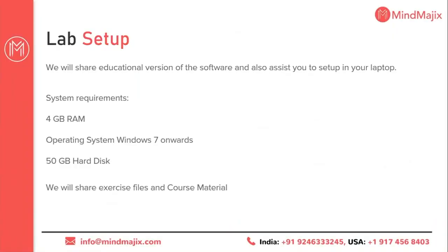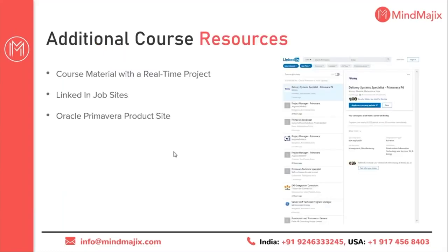Let's jump into the lab setup. We will provide you the educational version of the software and assist you to set it up on your laptop. The minimum system requirement is 8 GB of RAM, Windows 7 or later operating system, and minimum 1 GB disk capacity. As part of this course, we are going to share exercise files and course material. The course material includes a real-time project example and will guide you through each concept. You can also check LinkedIn job sites for available roles, and visit the Oracle Primavera product site to get more insights on this product.